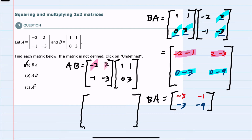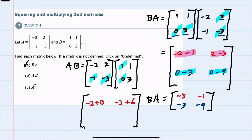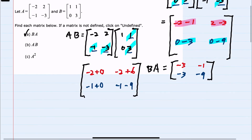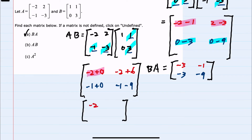Multiplying A times B, starting with row 1 times column 1: negative 2 times 1 is negative 2, and 2 times 0 is 0. Row 1 times column 2: negative 2 times 1 is negative 2, and 2 times 3 is positive 6. Moving to row 2 times column 1: negative 1 times 1 is negative 1, and negative 3 times 0 is 0. Row 2 times column 2: negative 1 times 1 is negative 1, and negative 3 times 3 is negative 9. Simplifying: negative 2 plus 0 is negative 2; negative 2 plus 6 is 4; negative 1 plus 0 is negative 1; and negative 1 minus 9 is negative 10.